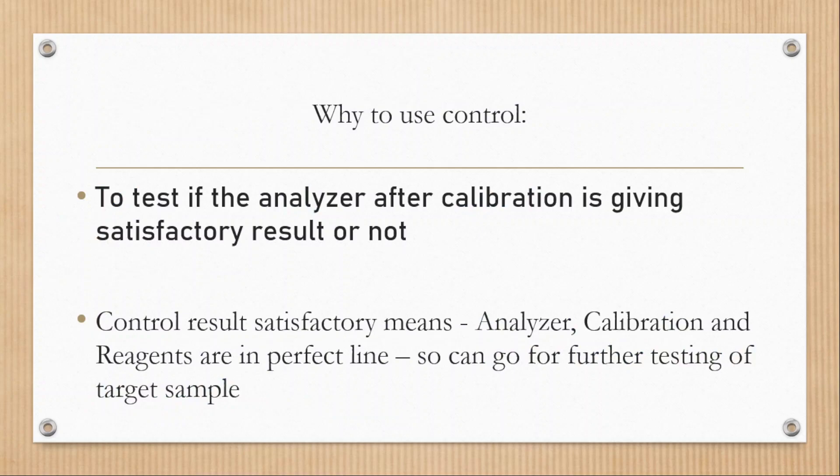Why to use control? To test if analyzer after calibration is giving satisfactory result or not. Control result satisfactory means analyzer calibration and reagent are in perfect line.